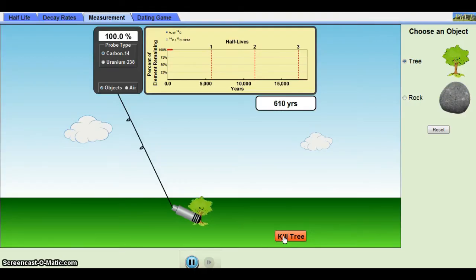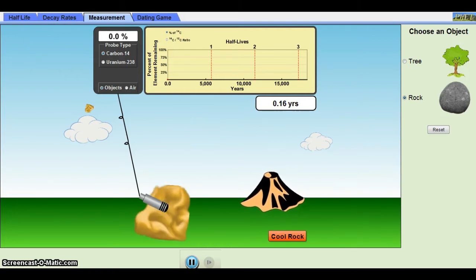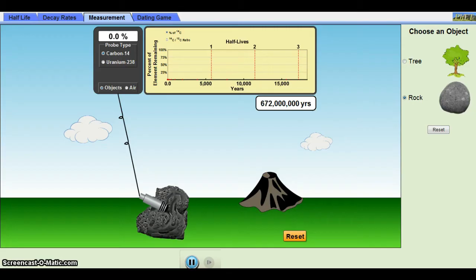The measurement section allows students to practice what they learned in the decay rate section and provides information on which isotope should be used for different objects. It also serves as a bridge between the concepts learned in the previous sections and their applications in the dating game section.